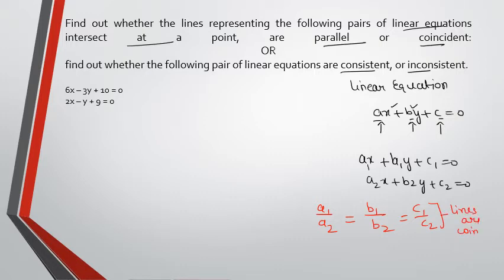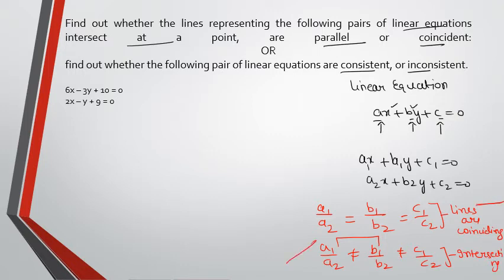That means they lie on one another coinciding. If let's say these ratios are not equal, any of them, you can simply write first two also, then we can say that lines are intersecting. That means for coinciding, you have one line over another, whereas for intersecting, it is intersecting at a point.